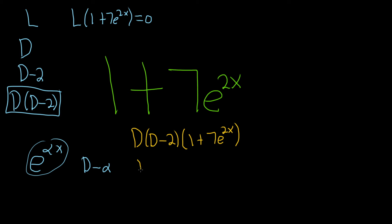All right, so we have D. And now the way this works is you just take this D and apply it to each of these pieces. So D applied to 1 means we take the derivative of 1, which is 0.